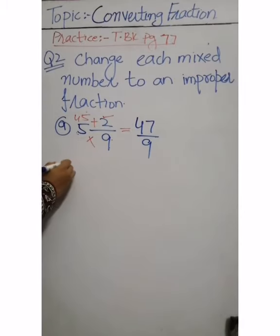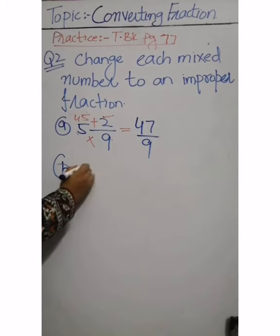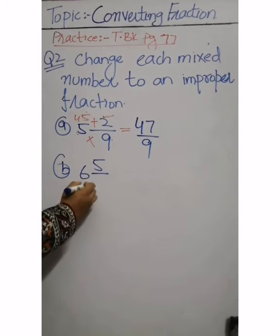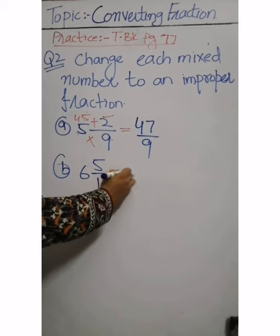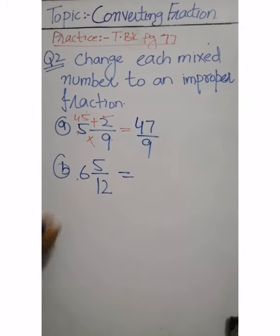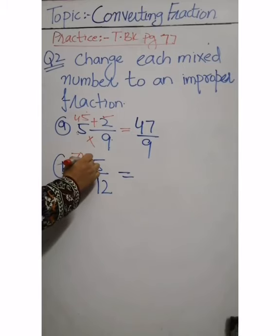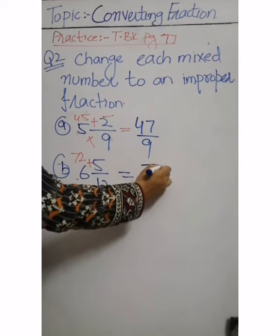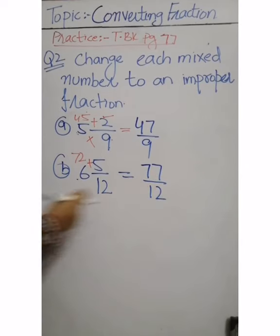Part b is 6 whole 5 by 12. We multiply 12 by 6 to get 72, then add the numerator: 72 plus 5 gives 77 by 12.